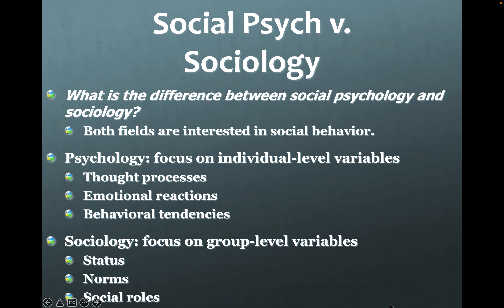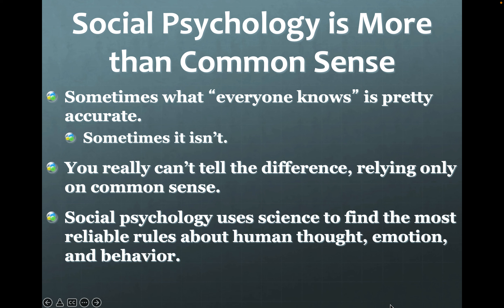What is the difference between social psychology and sociology? Both fields are interested in social behavior. Psychology focuses on individual level variables — the thought processes, emotional reactions, and behavioral tendencies we have. Sociology focuses on group level variables: status norms and social roles. So psychology looks at the individual in a social setting, while sociology looks at groups or group-level thought processes in social situations. Social psychology uses science to find the most reliable rules about human thought, emotion, and behavior.